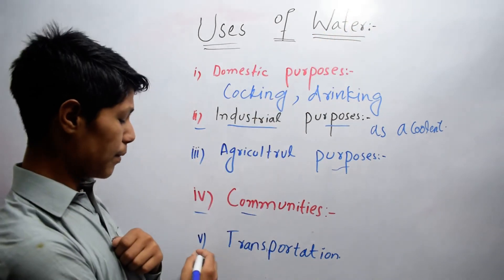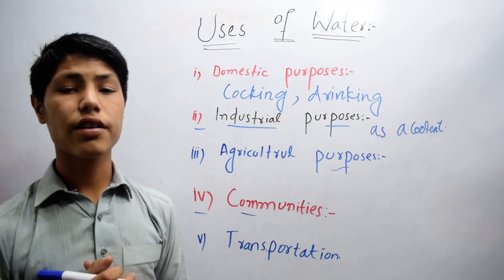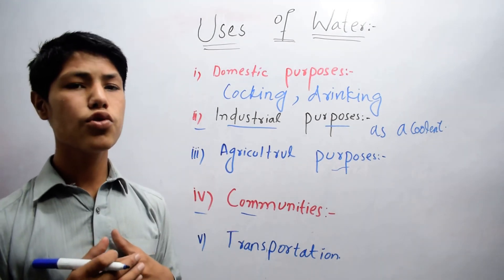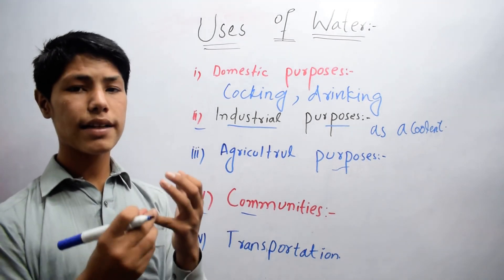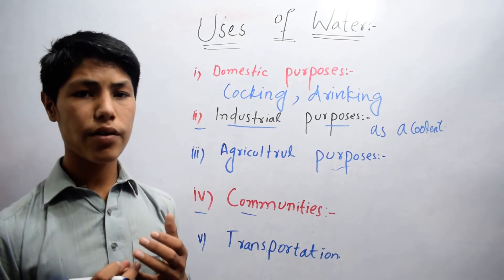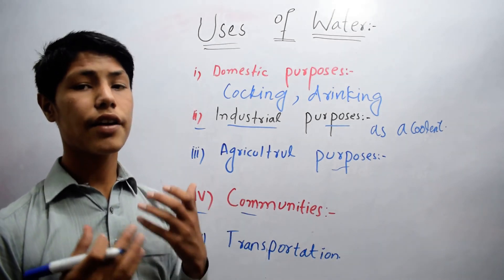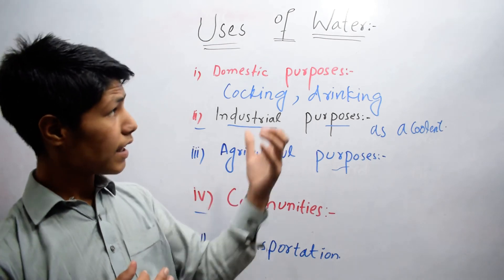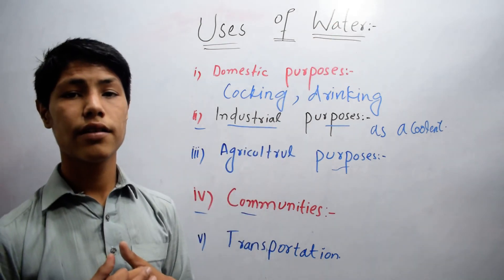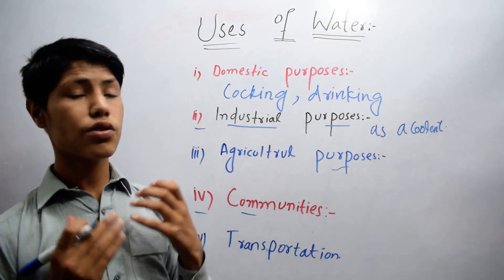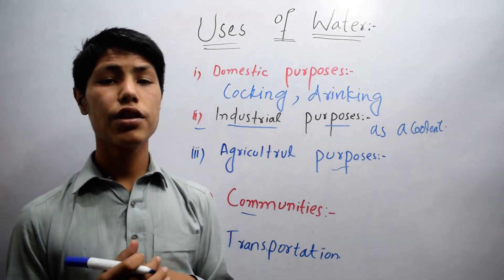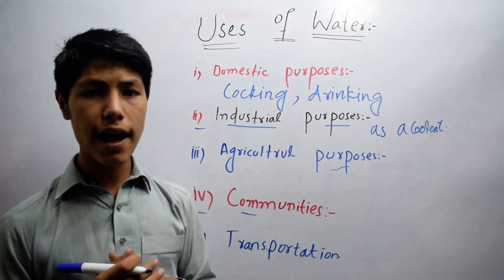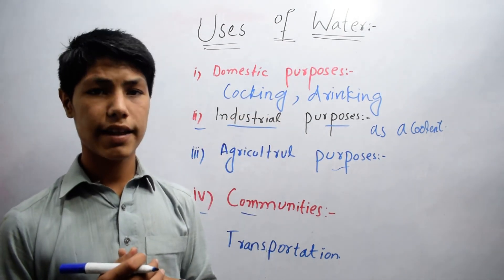The fifth one is transportation. Water is also used for transportation — for example, rivers, oceans, etc. In rivers there are ships and boats moving with the help of water. So this was all about the uses of water in our daily life. Thanks for watching.